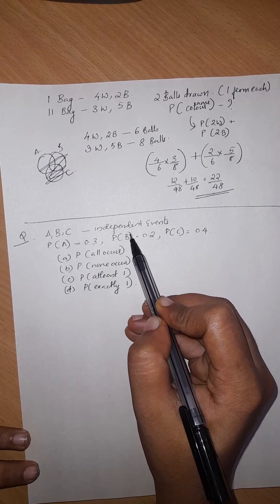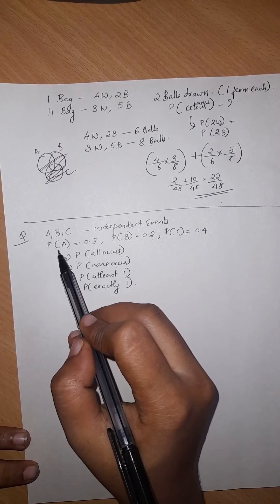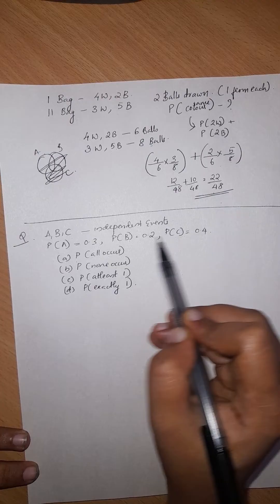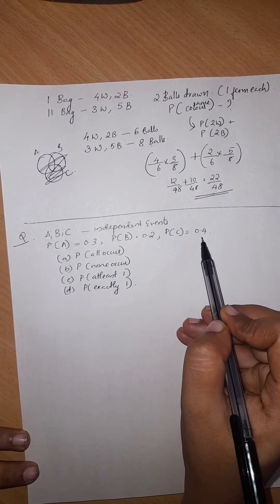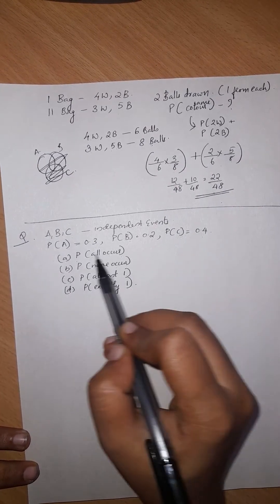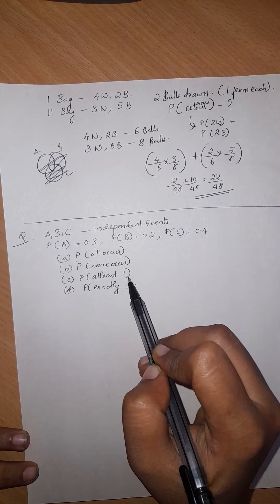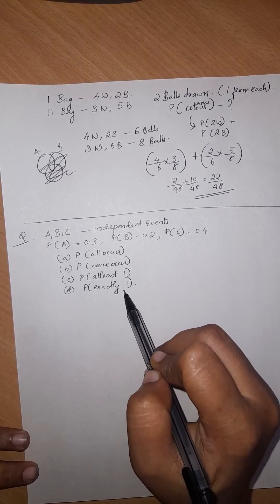They are independent to each other. So, probability of A, probability of B, probability of C: 0.3, 0.2 and 0.4 respectively. We want to find out what is the probability in which all occur, then probability none occur, probability at least one occur and probability exactly one occur.